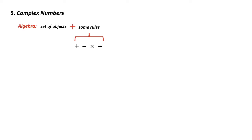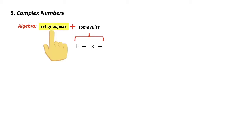You think of an algebra as a set of objects plus rules, and those rules are going to be add, subtract, multiply, and divide. Now, calm down — we got this, it's very manageable. The objects in this case are going to be complex numbers.